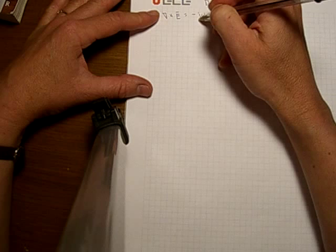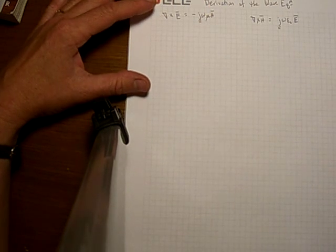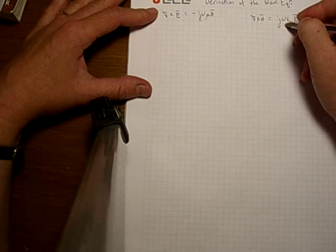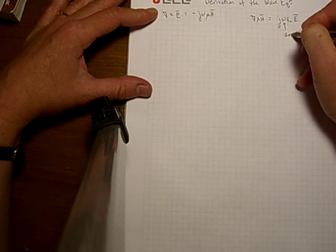You can see that it's the phasor domain because I'm using the form of Maxwell's equations that includes the j term. And right here is the frequency, 2 pi f.